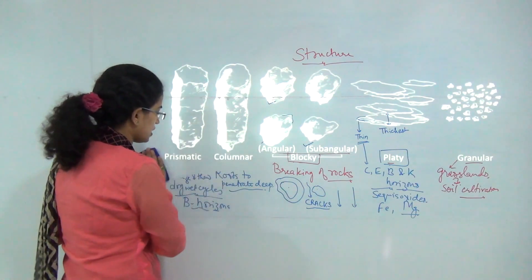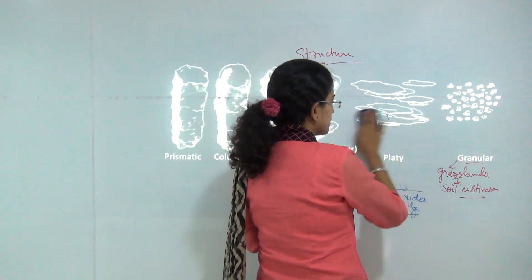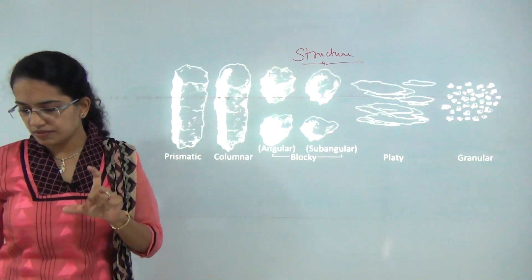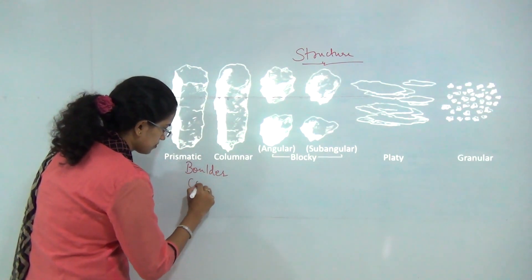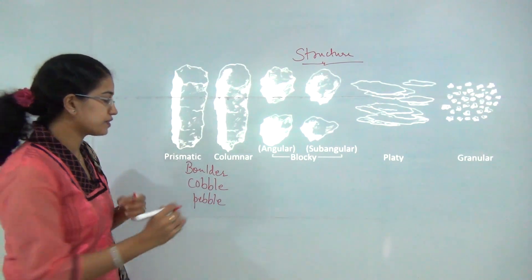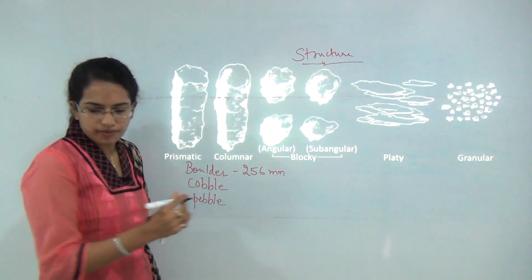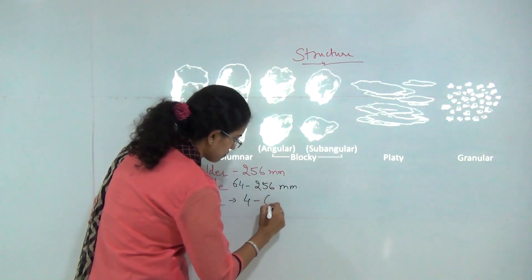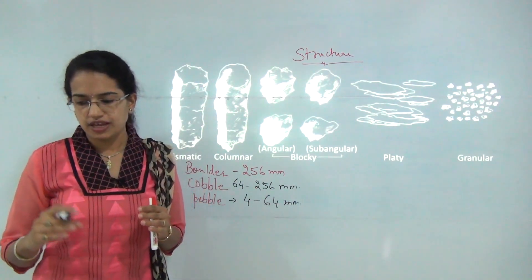The next classification covers texture and size, some of which we already covered in the previous lecture on the soil triangle — sand, silt, and clay. For the bigger particles: boulder is greater than 256 mm in size, cobble is between 64 to 256 mm, and pebble is between 4 to 64 mm. The classification of sand, silt, and clay we have already discussed.